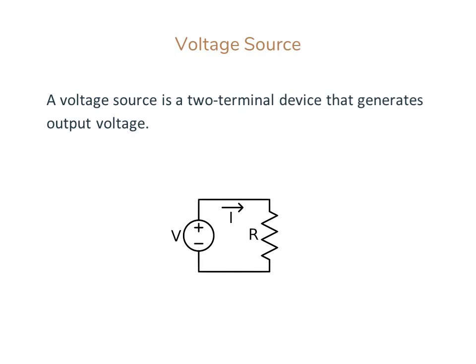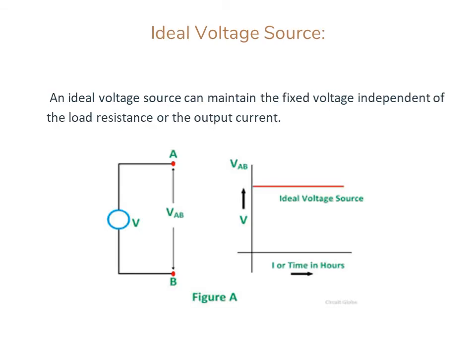Voltage source is a two-terminal device that generates an output voltage. Ideal Voltage Source: An ideal voltage source can maintain a fixed voltage independent of the load resistance or the output current.